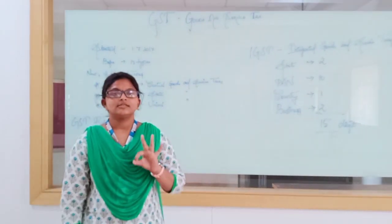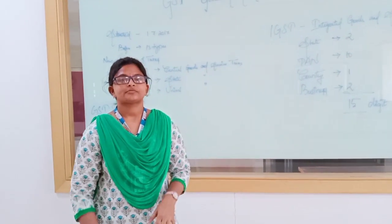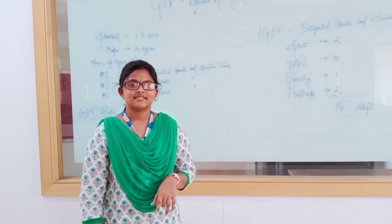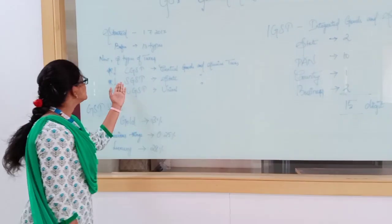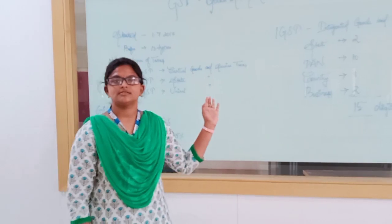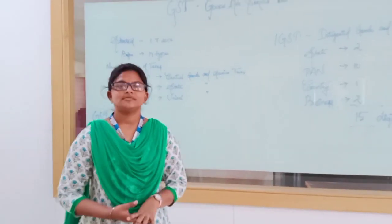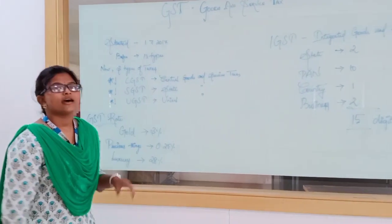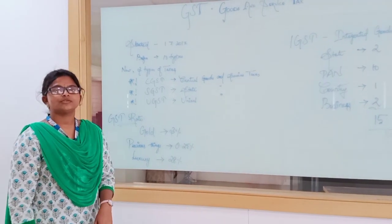In GST, there are 3 types of tax: CGST, SGST, and UGST. CGST means Central Goods and Services Tax. SGST means State Goods and Services Tax. UGST means Union Goods and Services Tax.